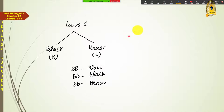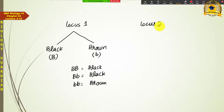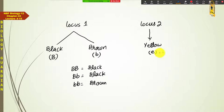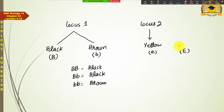Yellow coat color کا control ایک اور locus — locus two — کے ذریعے ہوتا ہے۔ Yellow coat color کے لیے responsible gene ایک recessive gene ہے جسے small e سے represent کریں گے۔ اس کی dominant form capital E yellow color کو inhibit کرتی ہے۔